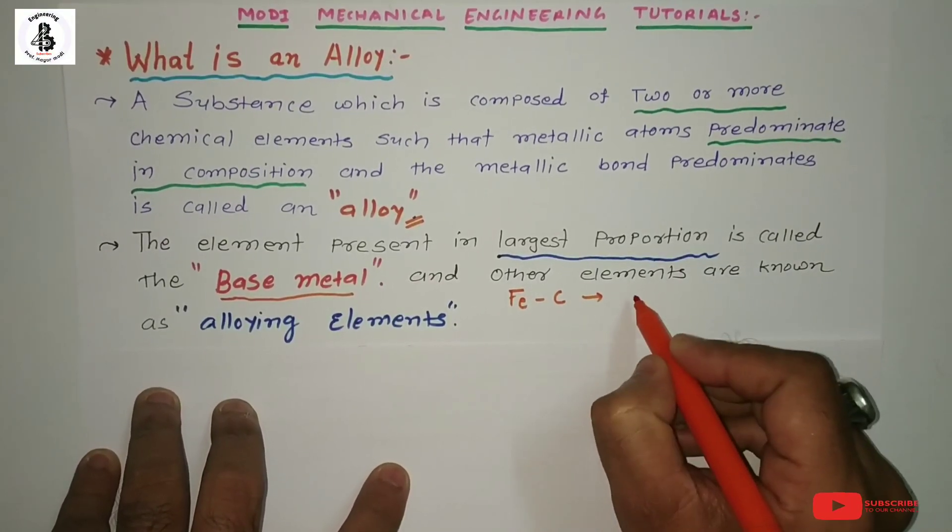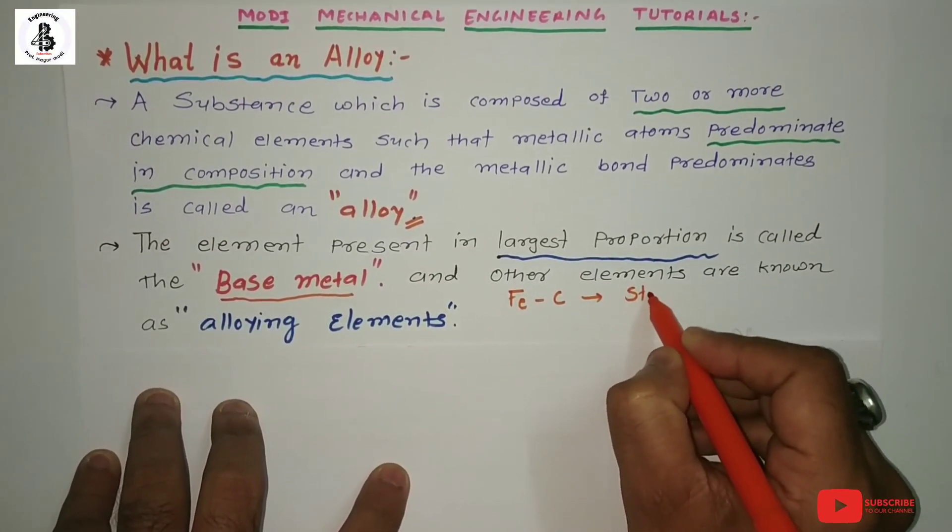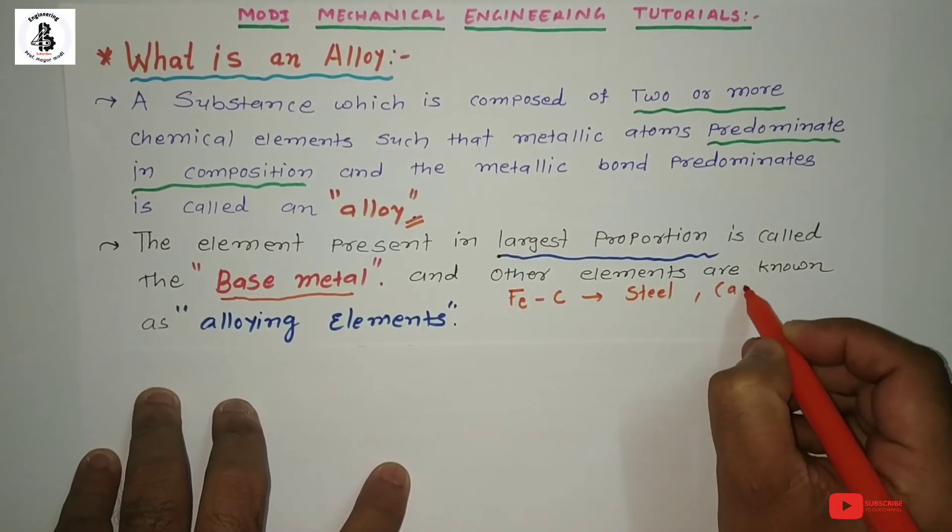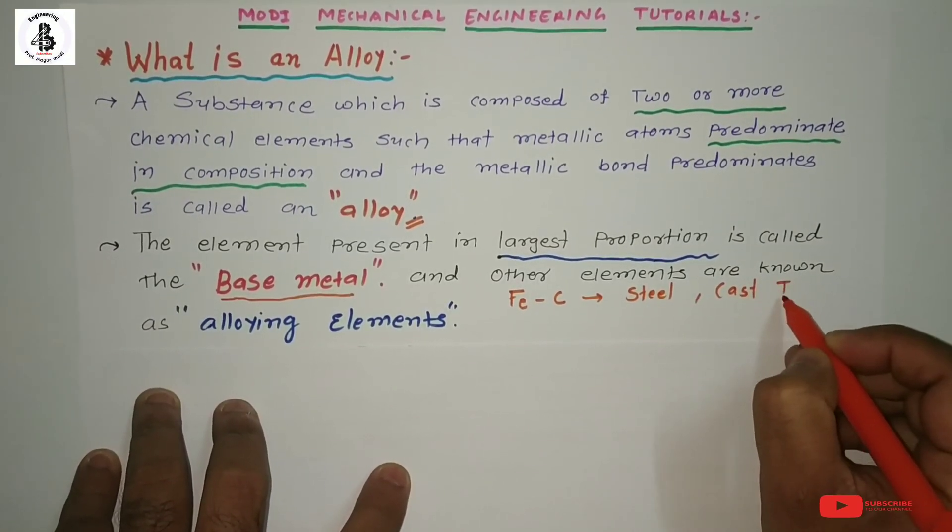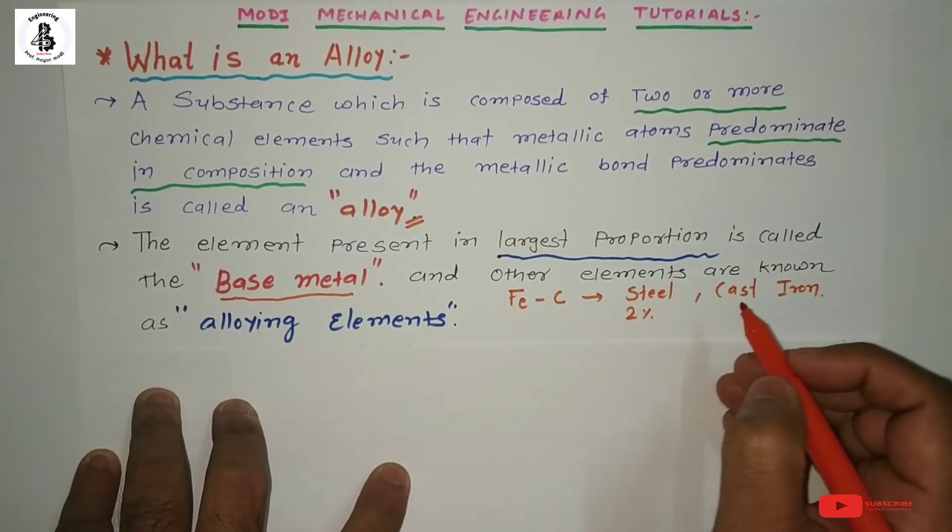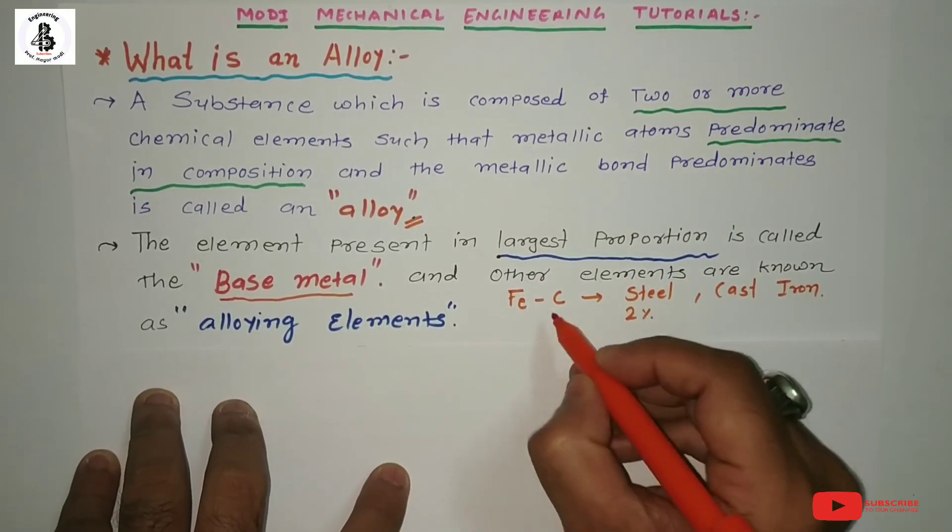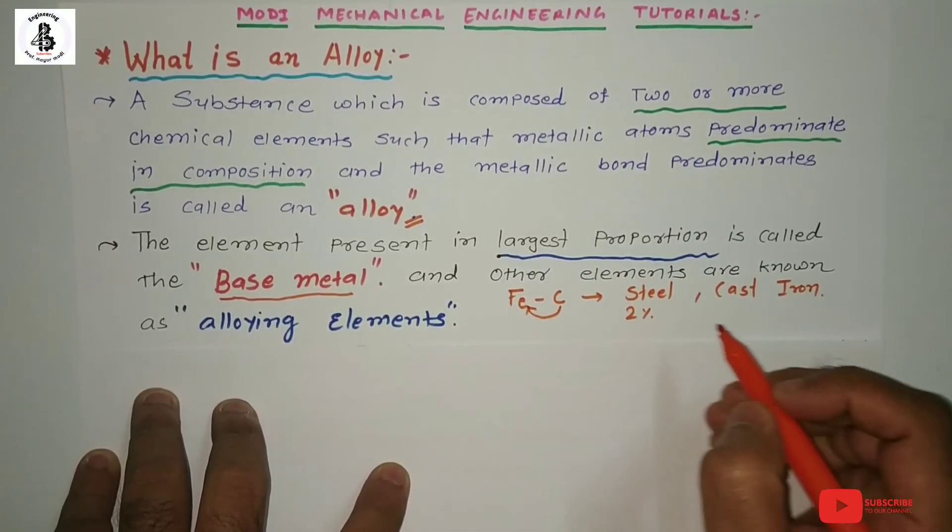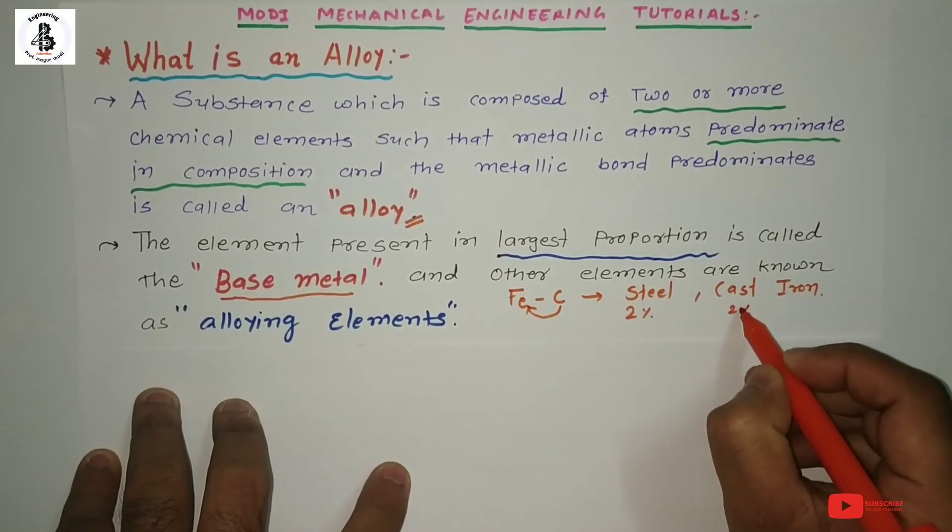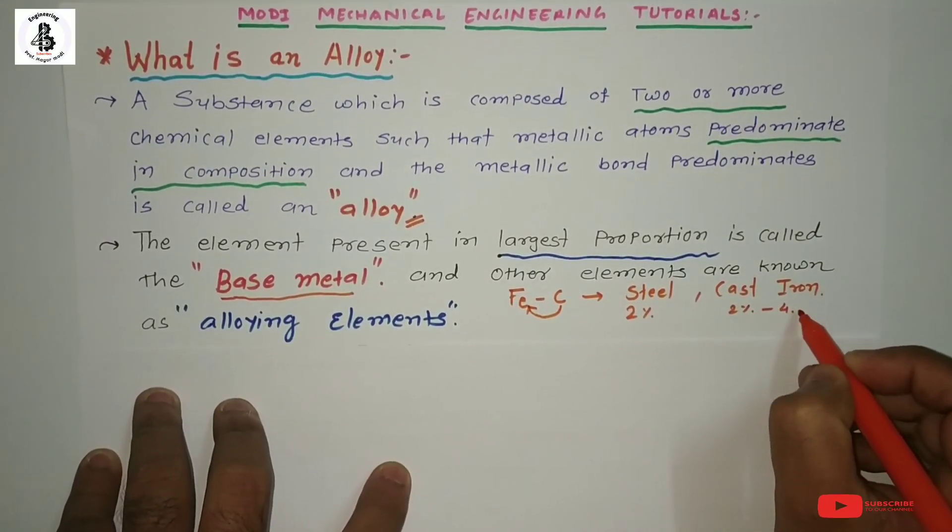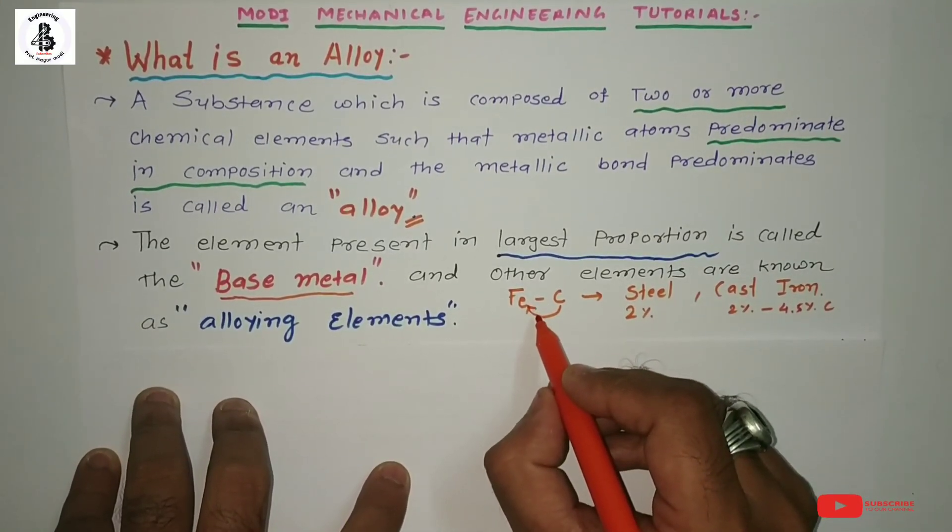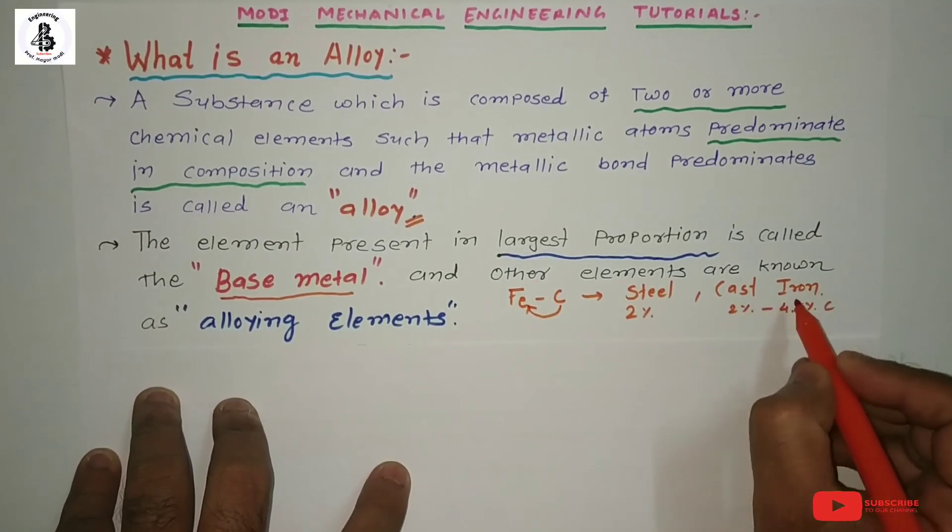In the case of steel and cast iron, these are the basic two products from the iron-carbon diagram. Up to two percent carbon into iron will form steel, and two percent to maximum four point five percent carbon into iron will produce cast iron.